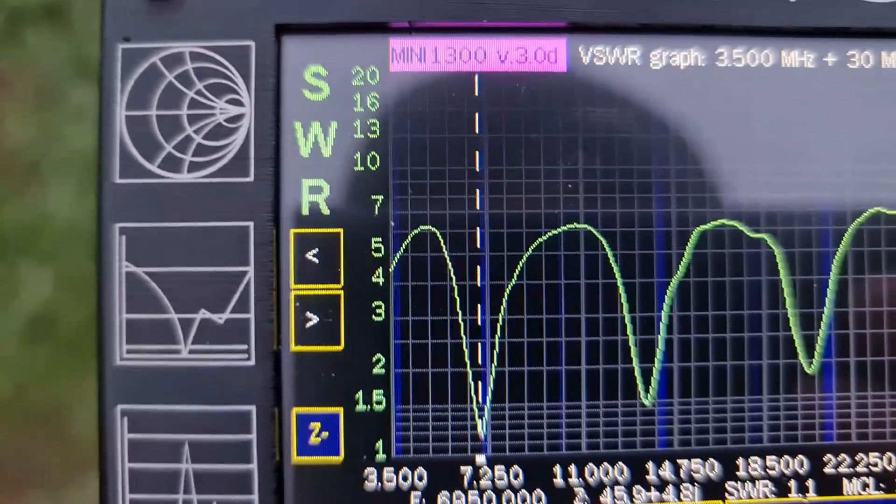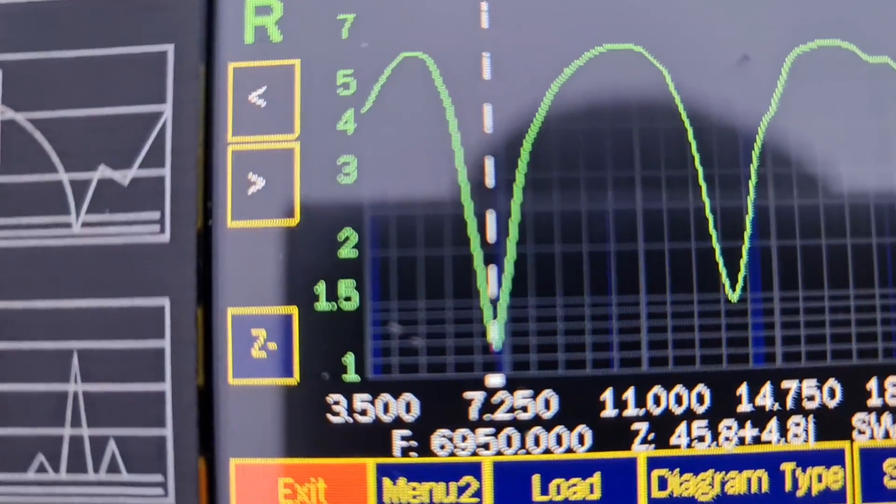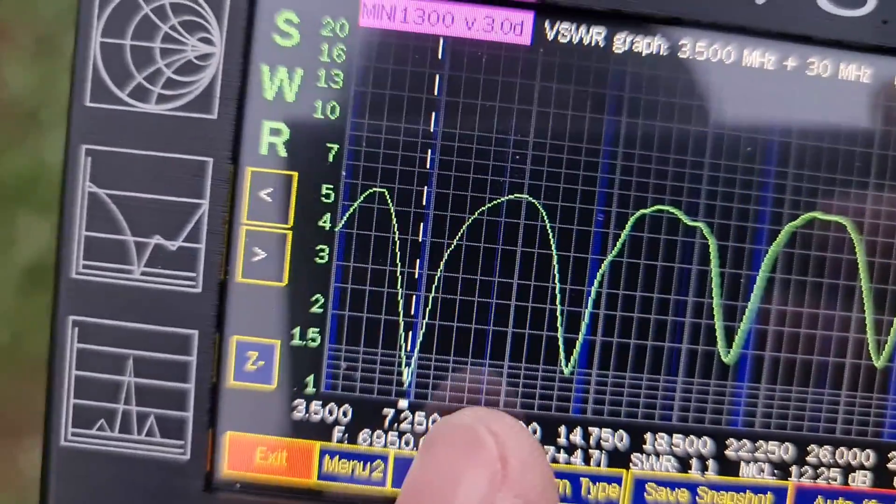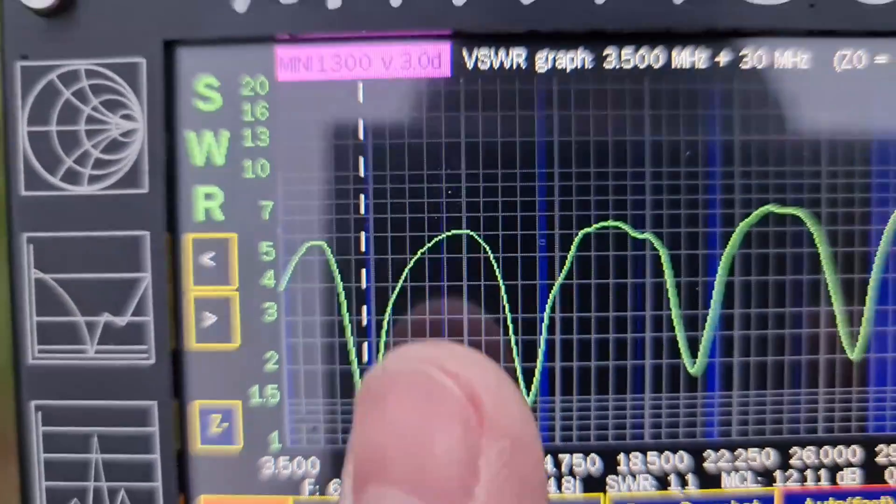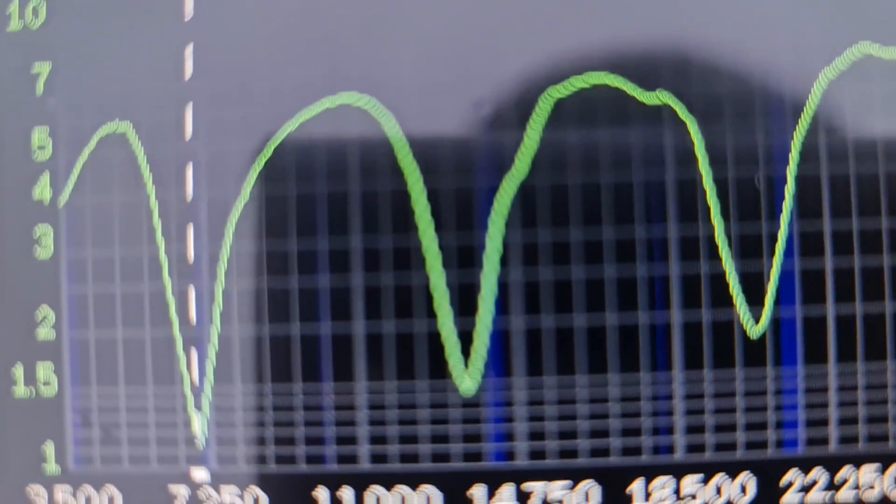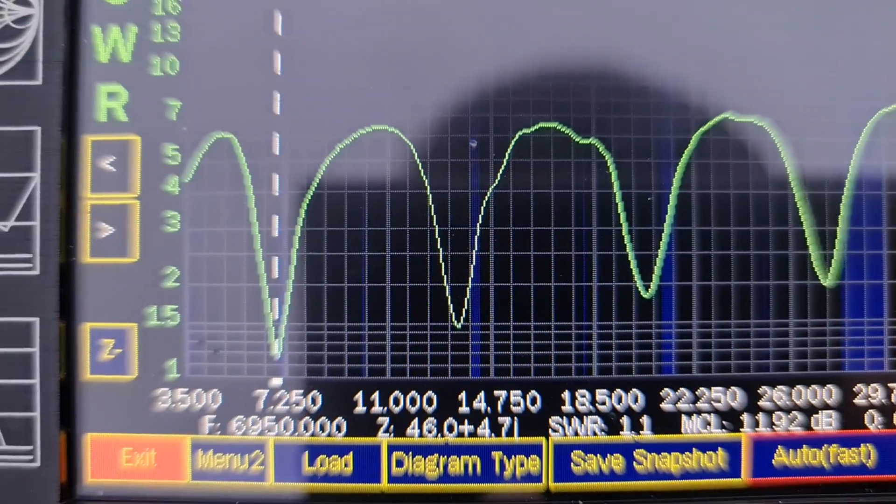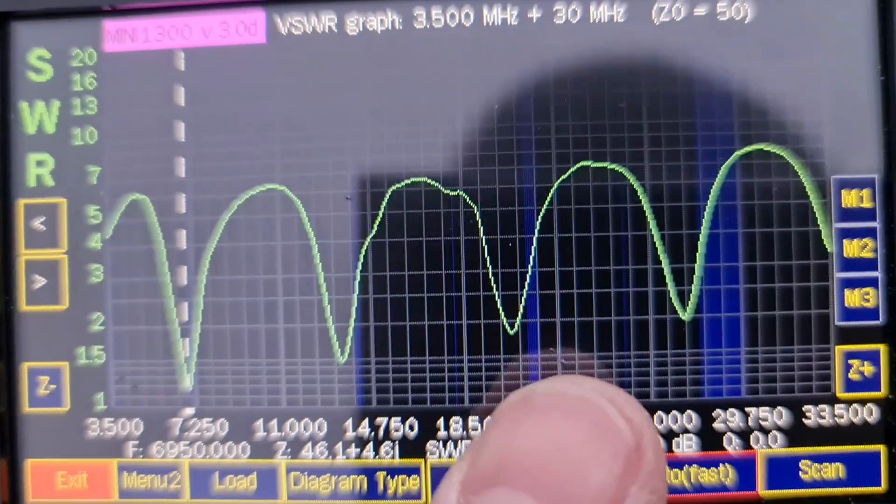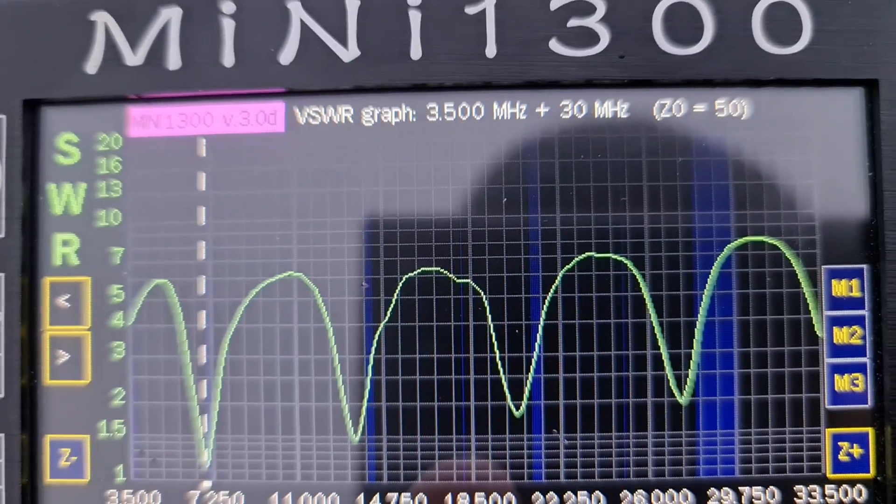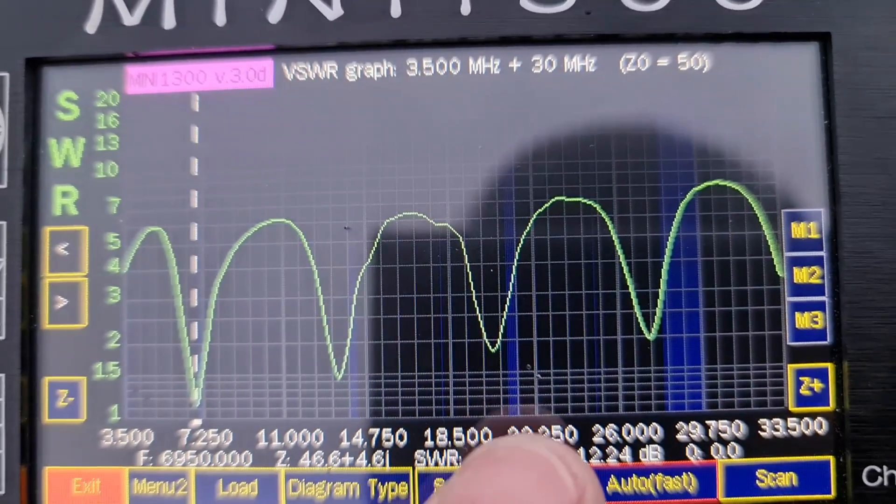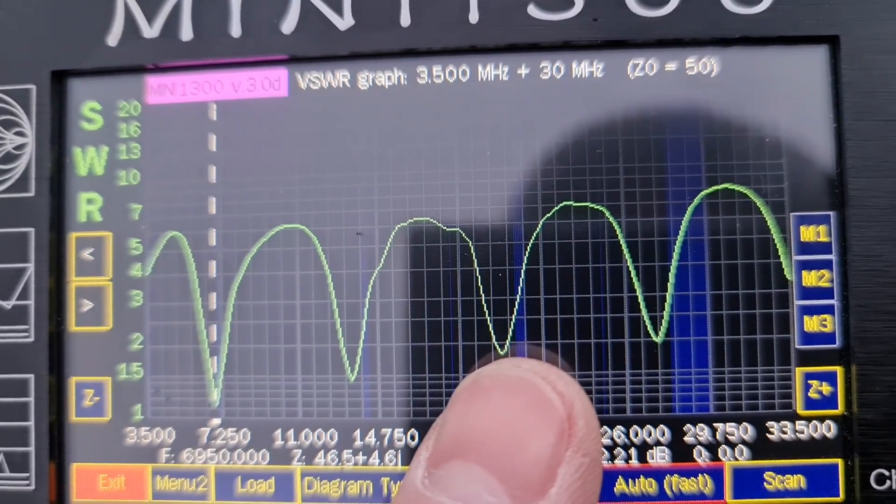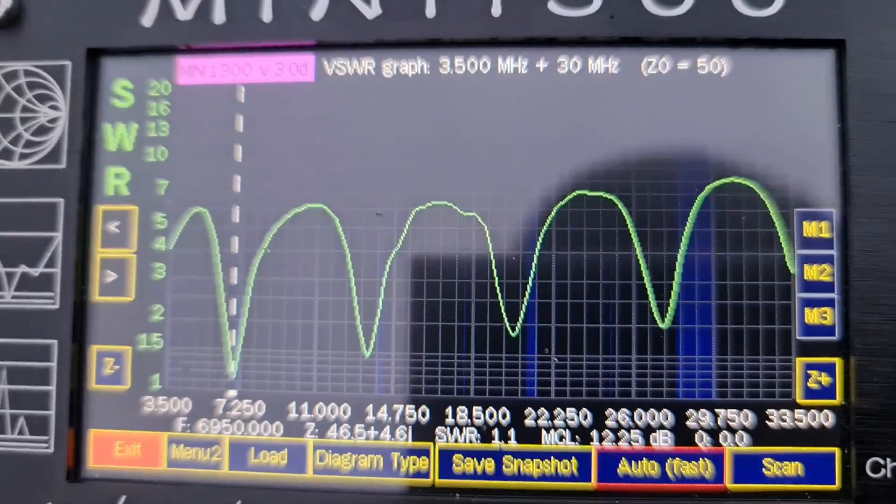You can see the curve on 7 megahertz, that's the 10 megahertz which is completely out of range. Here you can see 14 megahertz, it could be better if I cut a little bit from the wire. There we have 17 megahertz, this is a little bit higher on SWR 5 so it's not usable on the WARC. And here we have 21 megahertz, it's also a little bit lower so again we need to cut the wire.